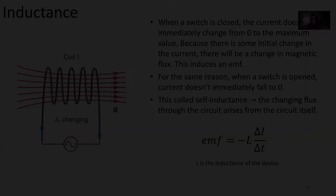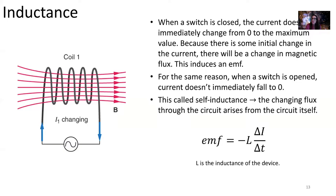When the switch is closed, the current immediately changes from zero to a maximum value in the circuit. Because there is some initial change in that current, there's going to be a change of magnetic flux, which induces an EMF. And for the same reason, when we open our switch back up again, the current is not going to immediately fall to zero. It's going to take some time to do that, creating a changing magnetic flux that produces what we call self-inductance.